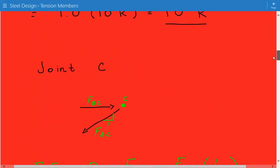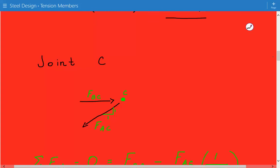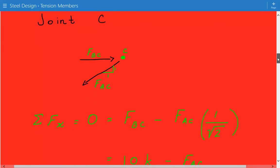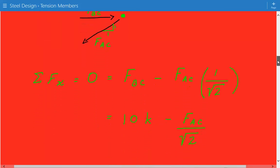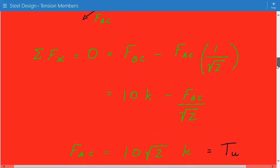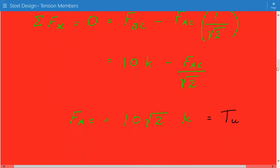So here's our joint C. We have member BC framing into it and member AC framing into it. So we have this compression force FBC, and then we have a tensile load FAC, the force in the diagonal brace. So if we sum the forces in the horizontal direction, we just do simple statics and find that FBC minus FAC times 1 over the square root of 2. So the tensile force in brace AC is equal to 10 times the square root of 2 kips, and this is our design tensile loading.